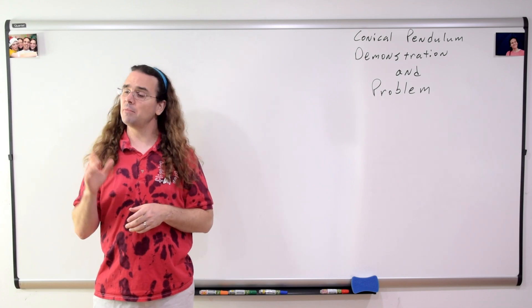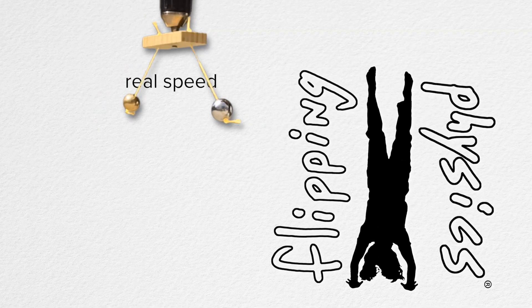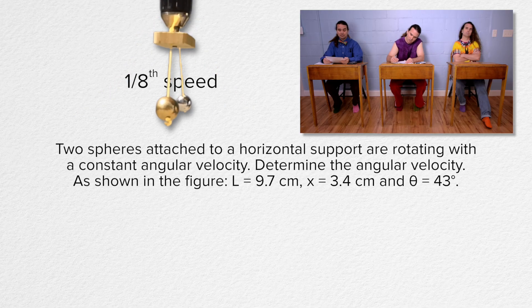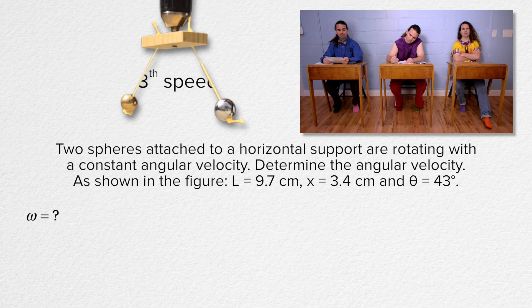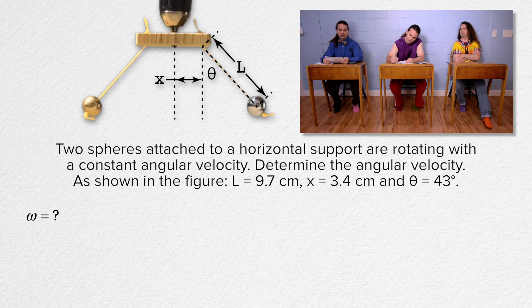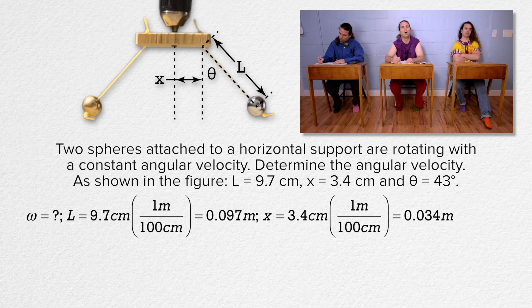Good morning. Billy, please read the problem and Bo, please translate. Flippin' physics! Two spheres attached to a horizontal support are rotating with a constant angular velocity. Determine the angular velocity. Angular velocity equals question mark. As shown in the figure, l equals 9.7 centimeters, x equals 3.4 centimeters, and theta equals 43 degrees. We need to convert the lengths to meters, so multiply by 1 meter over 100 centimeters to get l equals 0.097 meters, x equals 0.034 meters, and theta equals 43 degrees.